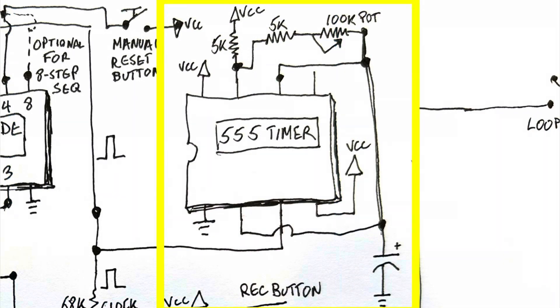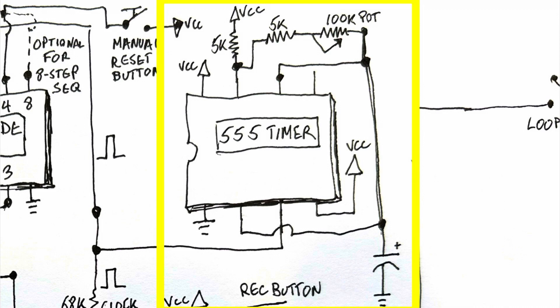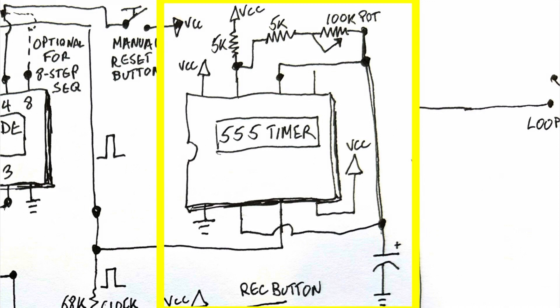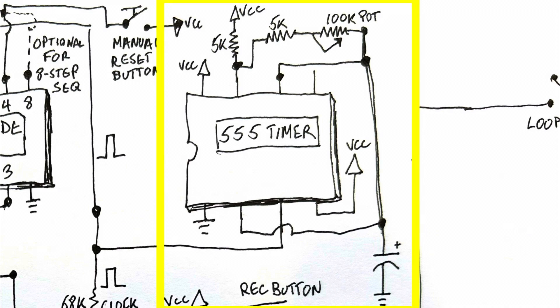Finally, I have here the clock driver for the sequencer, which is basically a 555 timer wired in a stable mode. That last capacitor that I didn't label, there is a 10 microfarad electrolytic capacitor, and two 5k resistors with a potentiometer to control the pace or the tempo.